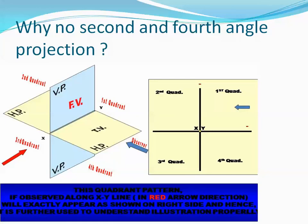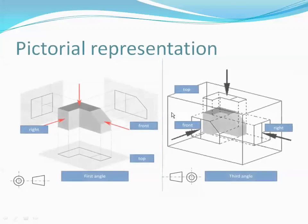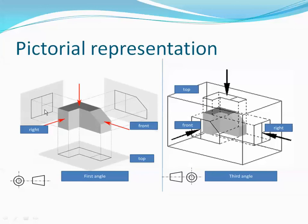So now you understand why there is no second and fourth angle projection, and why first and third angle projection are used. You also understand why the views are represented the way they are — front view on top, top view below. In first angle projection, the front view is at the top, top view is below, and the right view is at the right. The left side view is drawn on the right side.